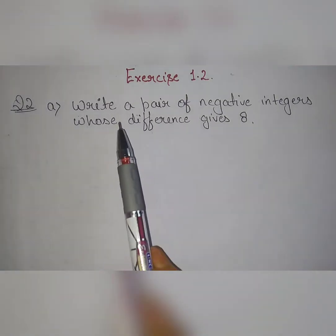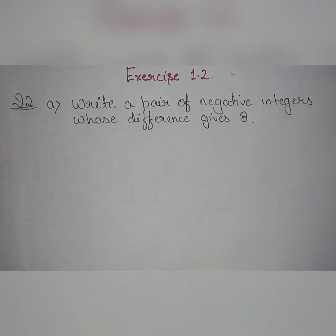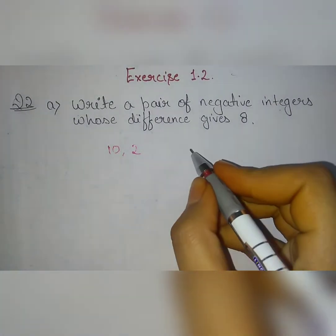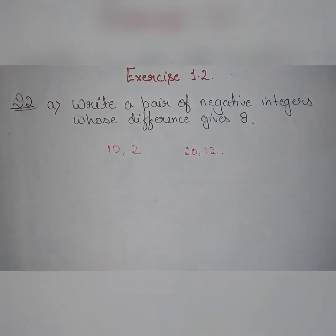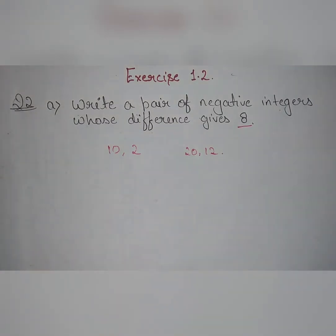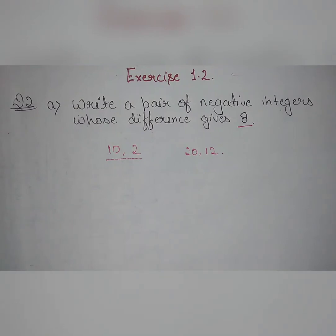The first part is: write a pair of negative integers whose difference gives 8. We have to find negative integers whose difference gives us positive 8. We know that the difference of 10 and 2 is 8, and the difference of 20 and 12 is 8, so there are many pairs whose difference is 8. But we have to take negative integers whose difference gives us positive 8.